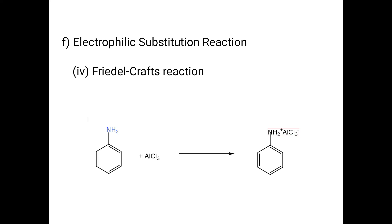To summarize, we saw the following chemical properties of amines: first, alkylation; second, acylation; third, carbylamine reaction (reaction with chloroform); fourth, reaction with nitrous acid; fifth, diazotization; and sixth, electrophilic substitution reactions — bromination, nitration, sulfonation, and Friedel-Crafts reaction. In Friedel-Crafts reaction, the product is not formed because a salt is obtained with the catalyst AlCl3. Thanks for watching the video, bye.